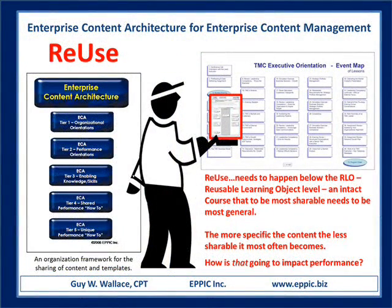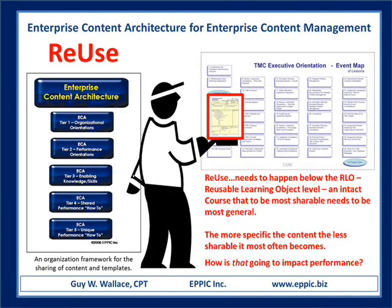Facilitating reuse in the PAC processes can be done sometimes at the event level or at the lesson level, but most often at the instructional activity level. When we talk about reuse, we're talking about reuse as-is or after modification. Modifying something that already exists can be quicker, cheaper, and better than starting from scratch and reinventing instruction that already exists and might be fine if just tweaked.